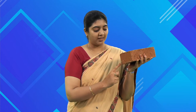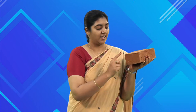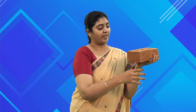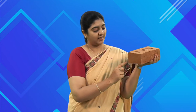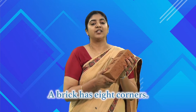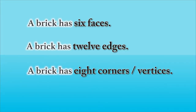The points where the edges meet are called corners. Let us see how many corners a brick has: one, two, three, four, five, six, seven, eight. So there are eight corners. We can say that a brick has six faces, twelve edges, and eight corners.